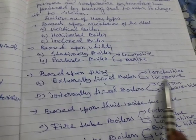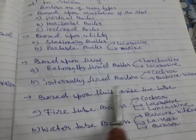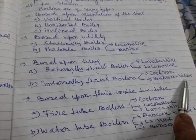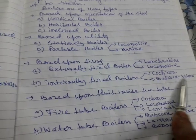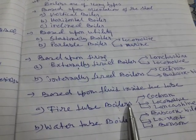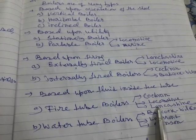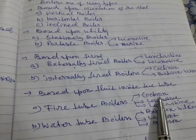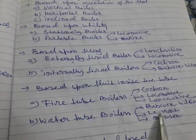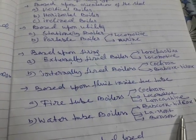Examples of externally fired boilers are the Lancashire boiler and locomotive boiler. Examples of internally fired boilers are the Cochran boiler and Babcock and Wilcox boiler. Based upon the fluid inside the tube: fire tube boilers include the Cochran, locomotive, and Lancashire boilers, while water tube boilers include the Babcock and Wilcox, Lamont, Invention, and Edges boilers.